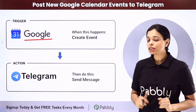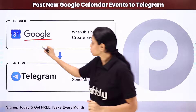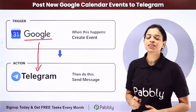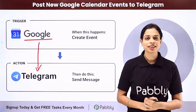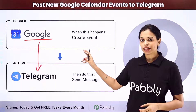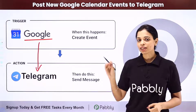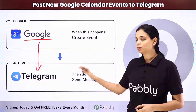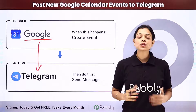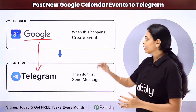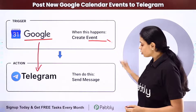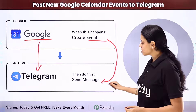How can you do this? You will have to integrate the two applications, and the same thing can be done using Pabbly Connect software. Your trigger application would be Google Calendar and your action application would be Telegram. Every time an event is created, automatically a message is sent.